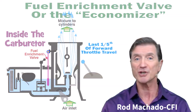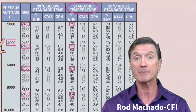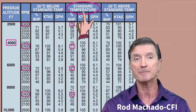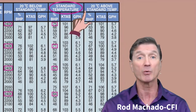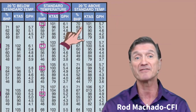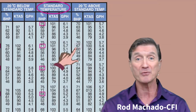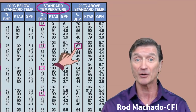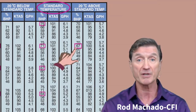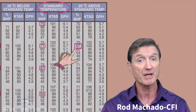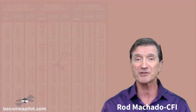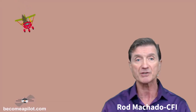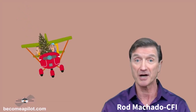Fuel enrichment works just fine as long as you are departing at density altitudes less than 4,000 feet. At higher density altitudes where the engine can't develop more than 75% power, you don't need fuel enrichment for takeoff. As a result, if you don't lean the mixture for takeoff at higher density altitudes, the excessively rich mixture will dramatically reduce your engine's performance. Think tree freshener time.